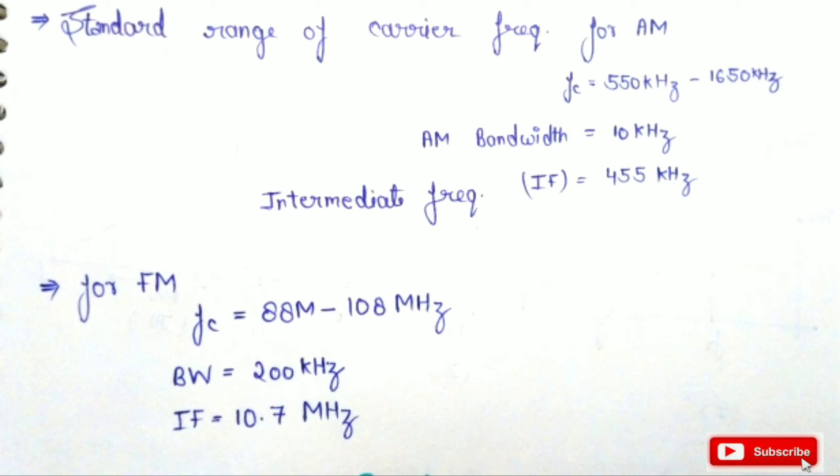AM bandwidth is given by 10 kHz, and the intermediate frequency (IF) is given by 455 kHz. For frequency modulation, the carrier frequency FC is given by 88 MHz to 108 MHz, bandwidth is given by 200 kHz, and the intermediate frequency is given by 10.7 MHz.